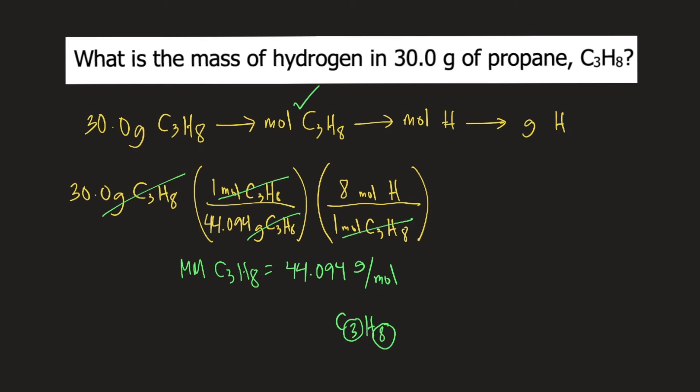And lastly, to convert moles of hydrogen into grams of hydrogen, you need the molar mass of hydrogen, which is equal to 1.008 grams per mole. One mole of hydrogen weighs 1.008 grams.